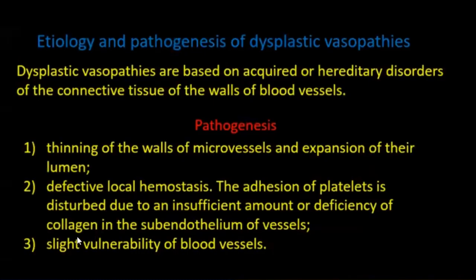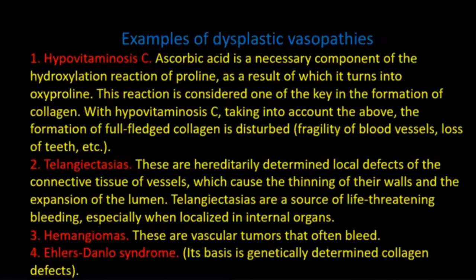Etiology and pathogenesis of dysplastic vasopathy is based on acquired or hereditary disorders of the connective tissue of the wall of blood vessels. Pathogenesis involves thinning of the wall of microvessels and expansion of their lumen, with defective local hemostasis and slight vulnerability of blood vessels. Examples include hypovitaminosis C, telangiectasia, hemangiomas, and Ehlers-Danlos syndrome.